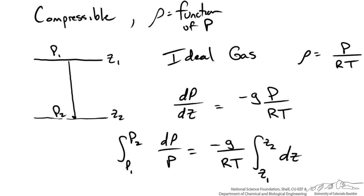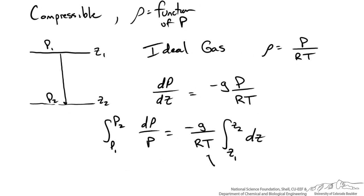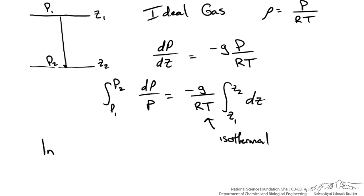So you should get an integral that looks like the following. Now the thing to note here is that we are looking at an isothermal case where our temperature is not changing as a function of the height of our fluid. So we can solve the integral. Now we can also write this into a more common form shown here.